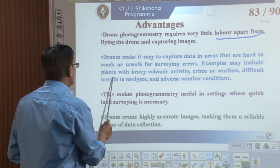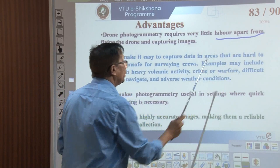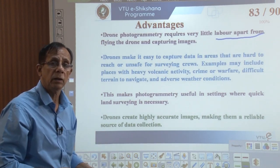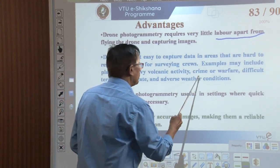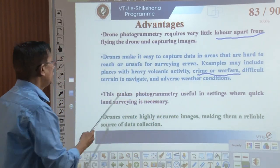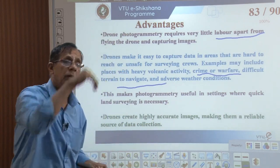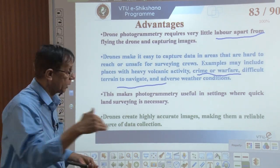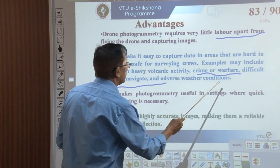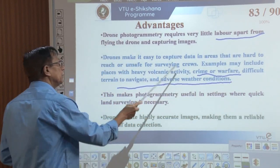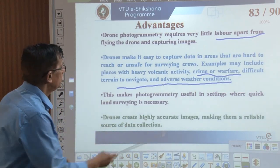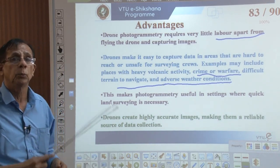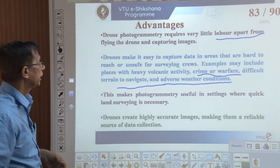Examples include places with heavy volcanic activity, crime or warfare where one is afraid to go. Personally going there becomes difficult. There may be high waves, floods, or high velocity currents at a river mouth. These are all areas where actual survey is difficult. In such cases, we can generate information from drone technology. Even in adverse weather conditions, these are situations which compel us to use drone technology to gather information.